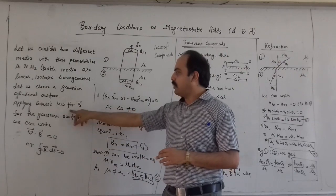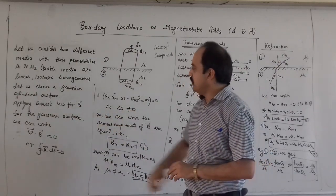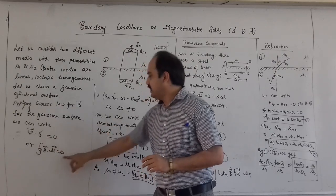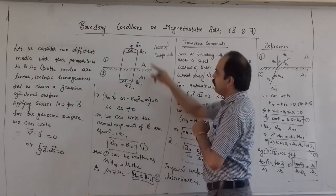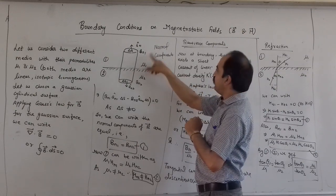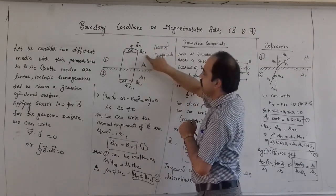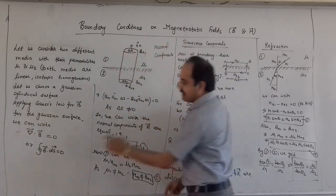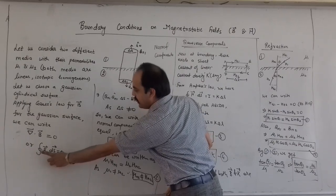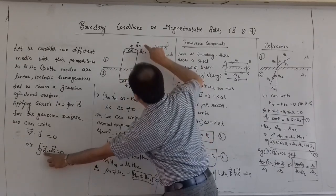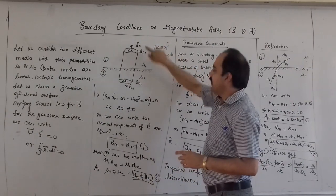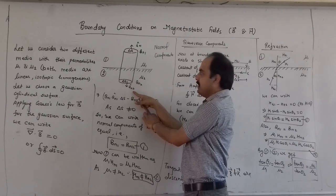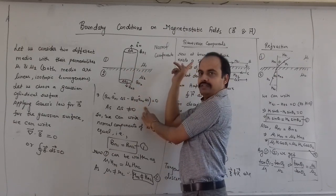Applying Gauss's law for B, that is divergence of B equal to 0, or in other terms the integration of B dot dS is equal to 0. So we will write the normal components. We write BN1 with unit vector AN1 and area delta S for the upper surface, and for the lower surface we have BN2 with AN2 and delta S. In the normal direction that sum will be 0.